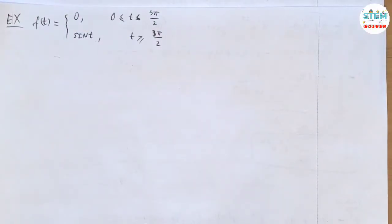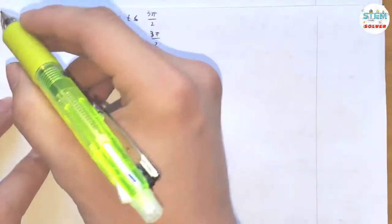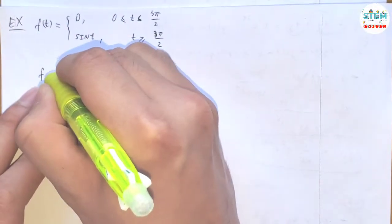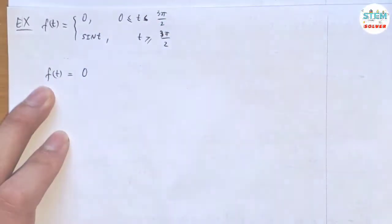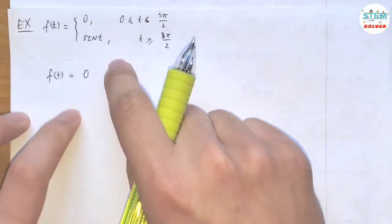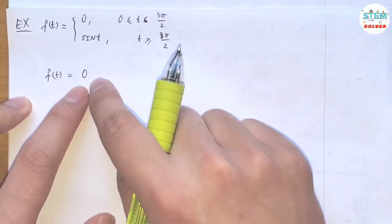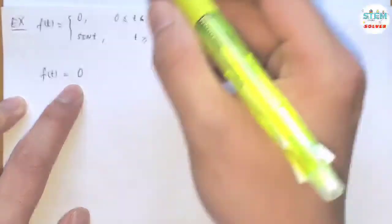Rewrite f of t in terms of the unit step function and then find the Laplace transform. So for this one, I'm going to start at 0. Normally I wouldn't write this out, but I want some of you to be able to see it, so I'll just write it out.